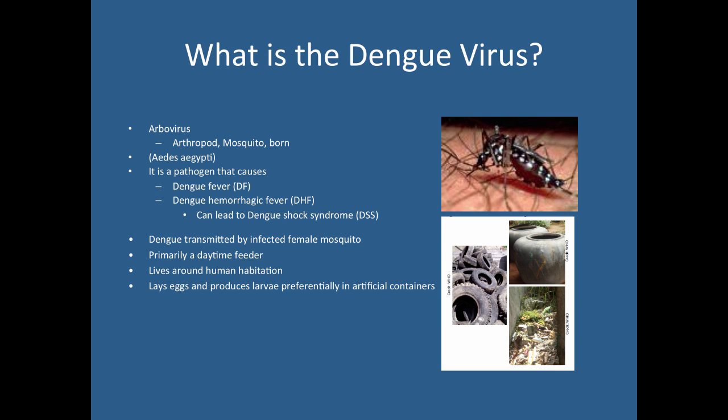Dengue virus is the first viral disease we actually talk about, and it's very similar to lymphatic filariasis in that it's mosquito-borne. There are two different forms of the disease: dengue fever and dengue hemorrhagic fever. Dengue hemorrhagic fever can lead into dengue shock syndrome. The severity increases progressively between dengue fever, DHF, and DSS.